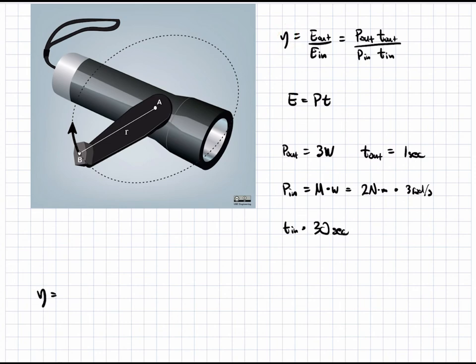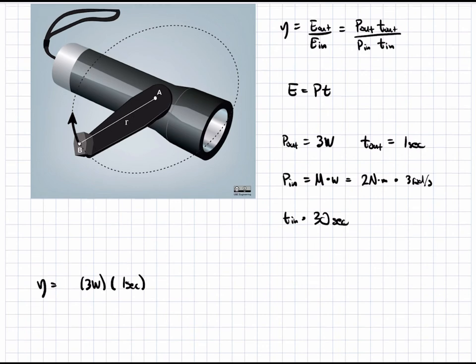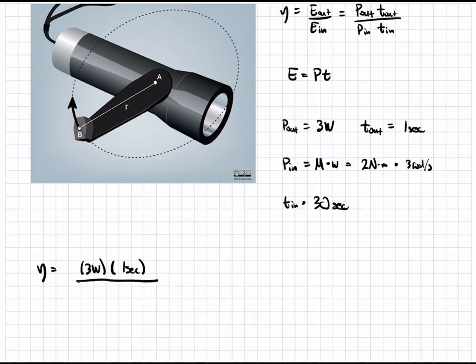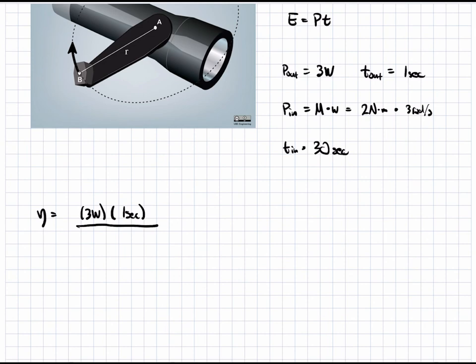So, efficiency is equal to 3 watts times 1 second. So, this would be the 3 joules that we require, that we pull out of the system, divided by all the energy that we put into the system. And, this energy is the 2 newton meters times 3 radians per second in 30 seconds.